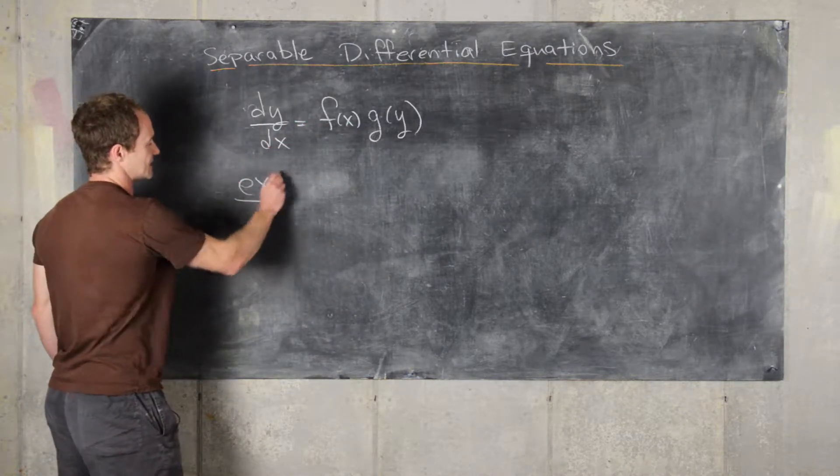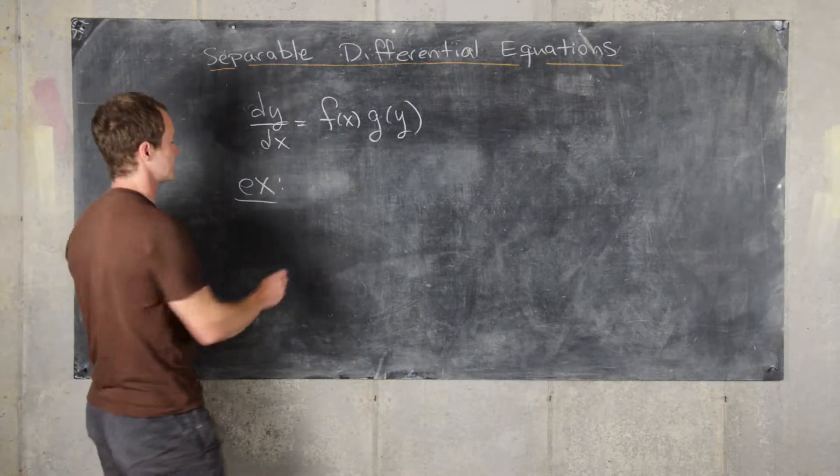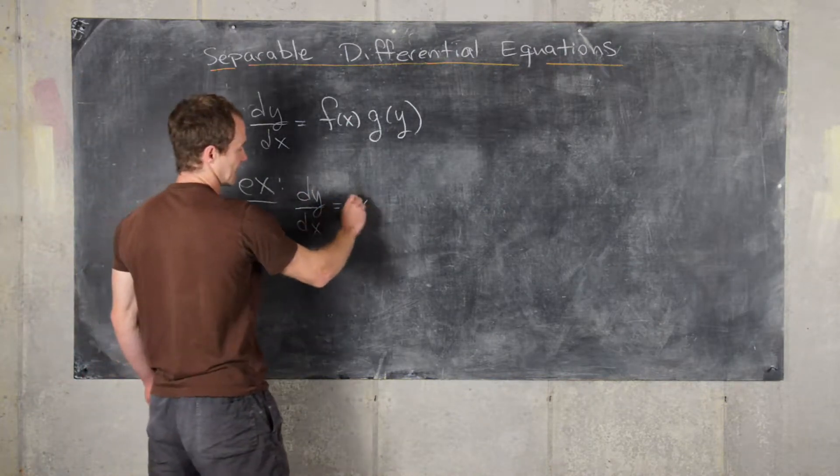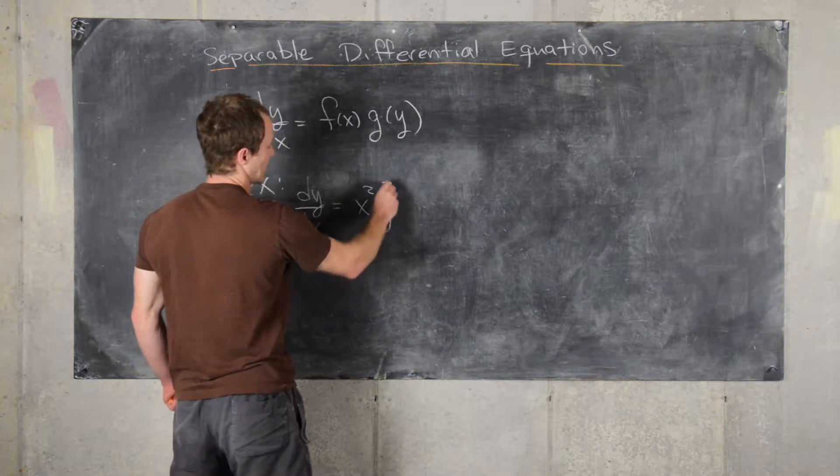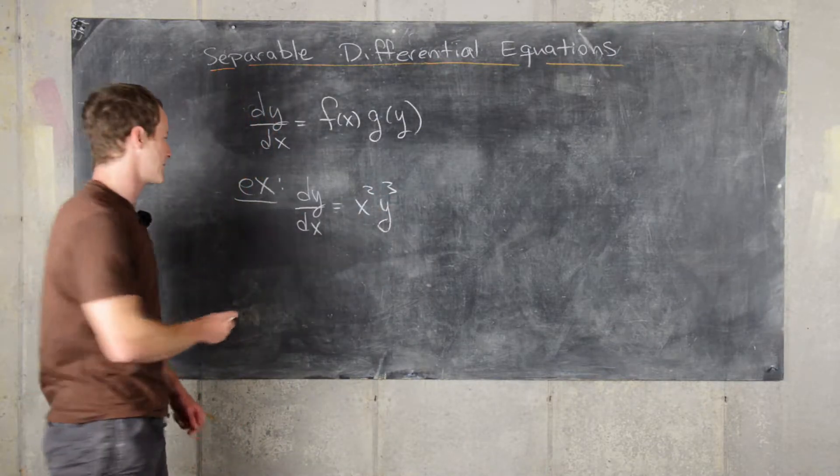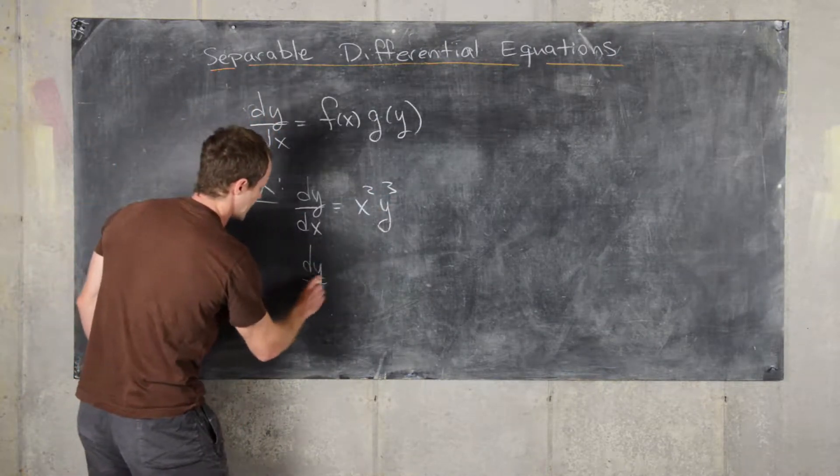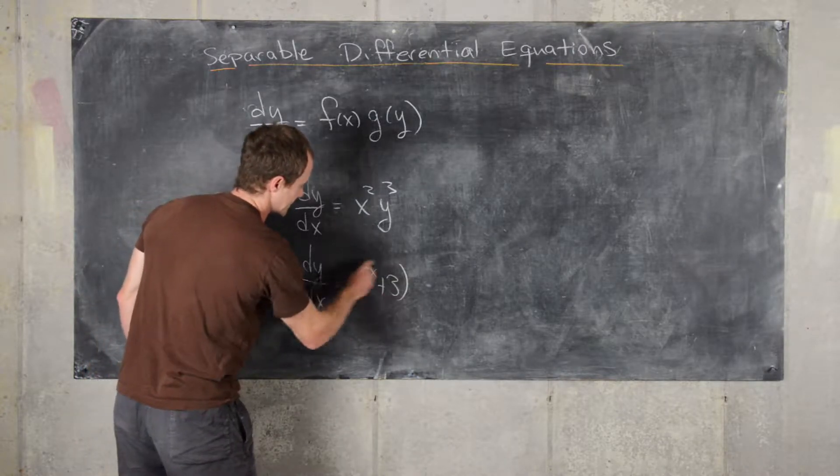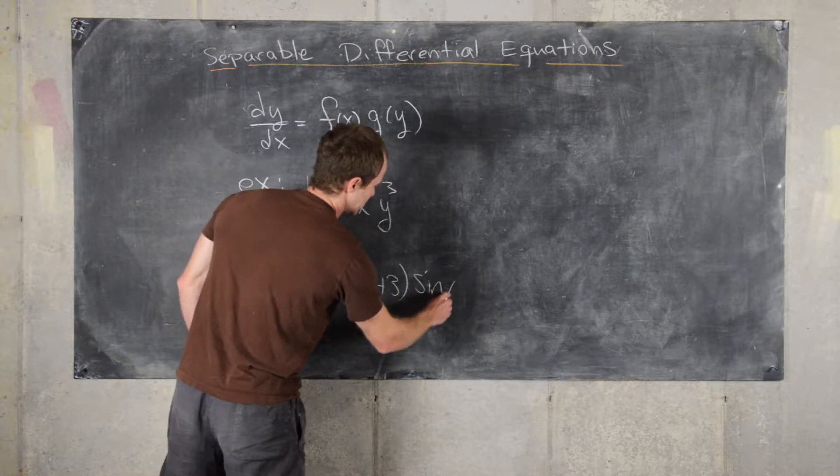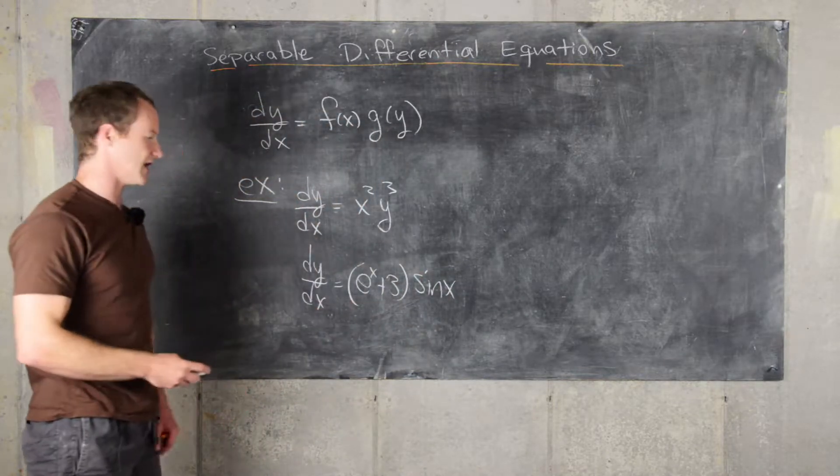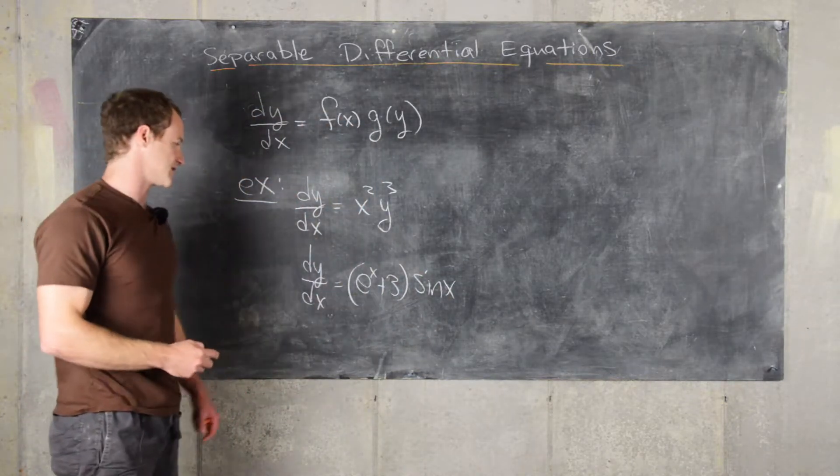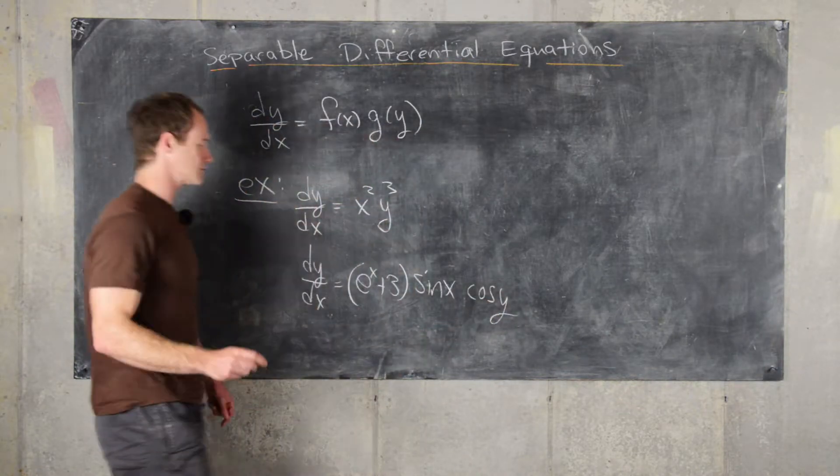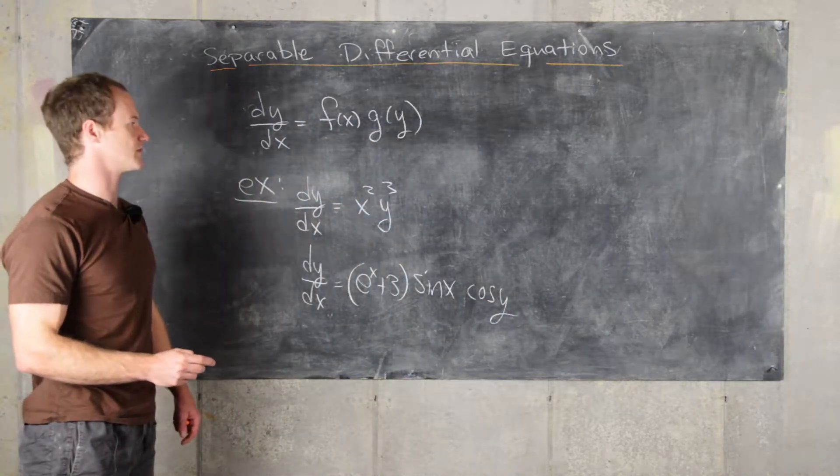Let's look at some examples and some non-examples. For example, dy/dx = x² times y³. That would be an example. Also, dy/dx = e^(x+3) times sin(x), where we have e^(x+3) grouped together, times cos(y). There's an example of a separable differential equation.